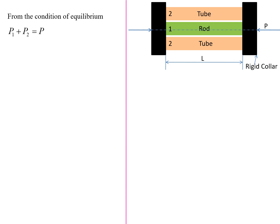First, we consider the condition of equilibrium. The applied load P is shared by two members: the rod and the tube. From the equilibrium condition, P1 (load shared by the rod) plus P2 (load shared by the tube) equals the applied load P. Let us call this Equation 1 — the condition of equilibrium.